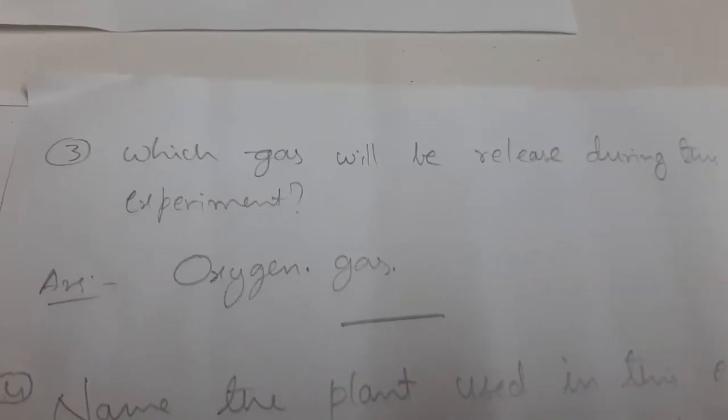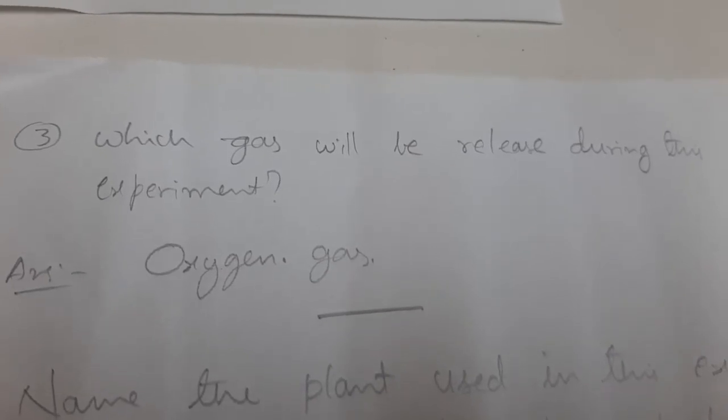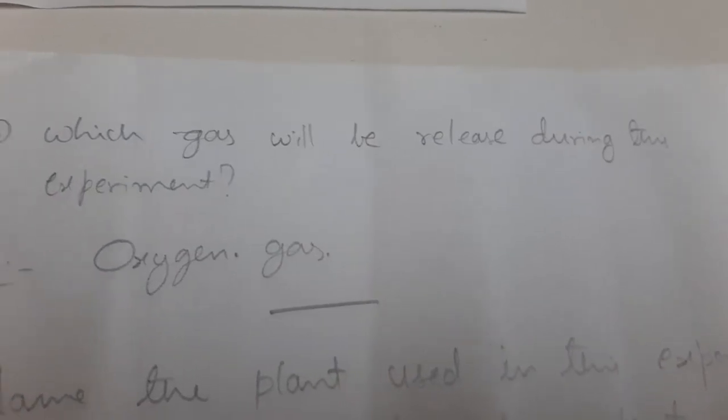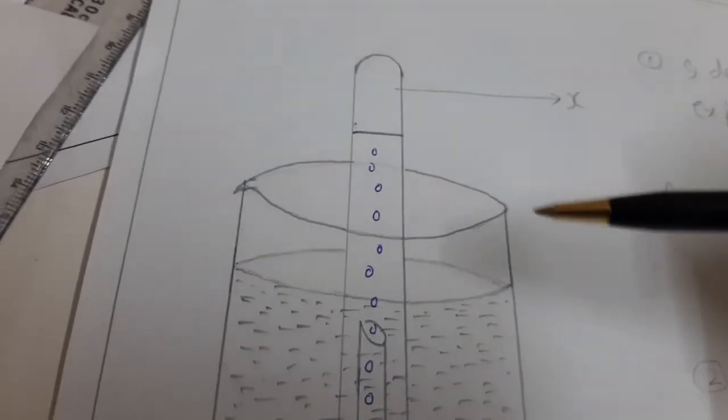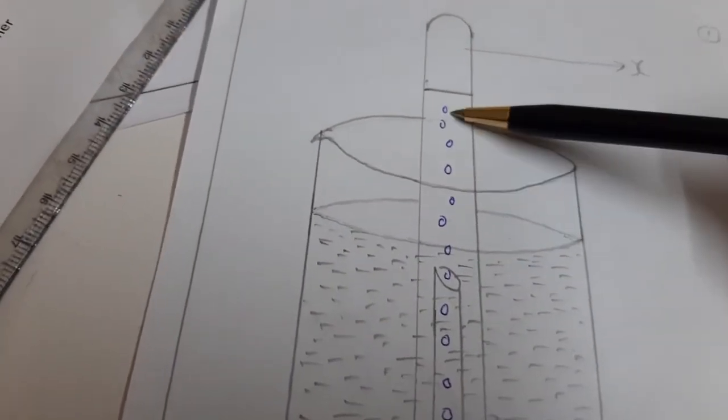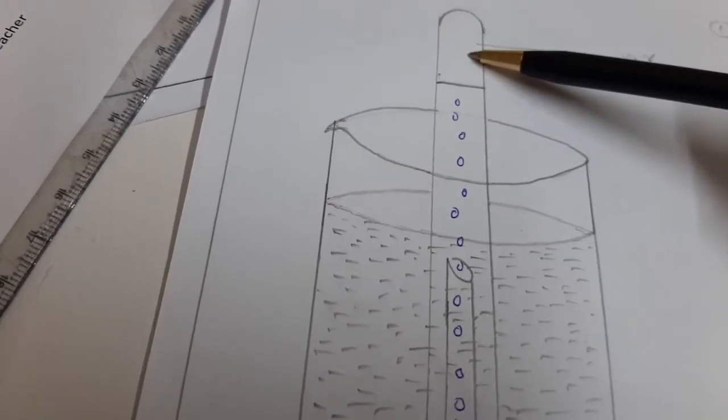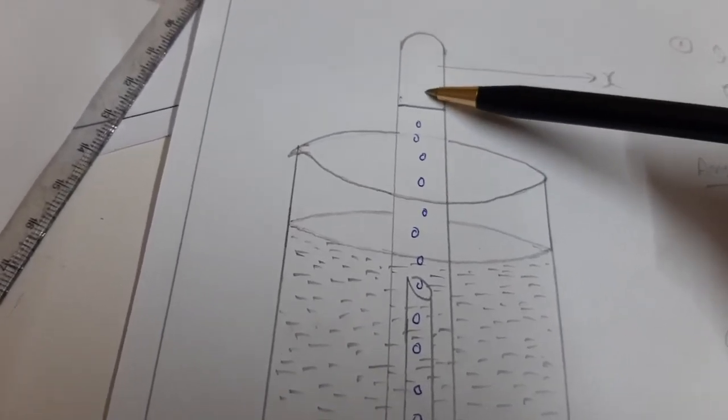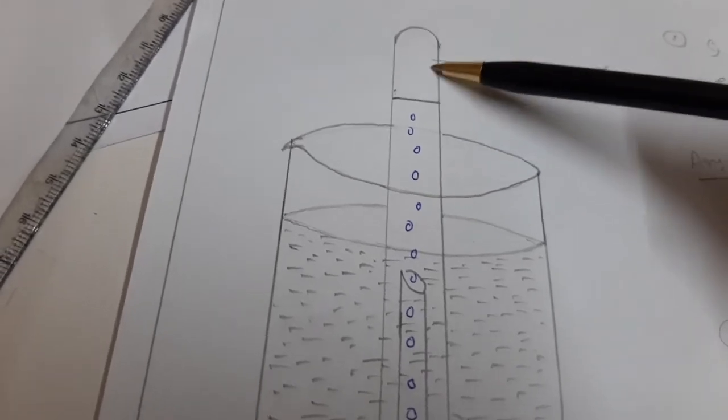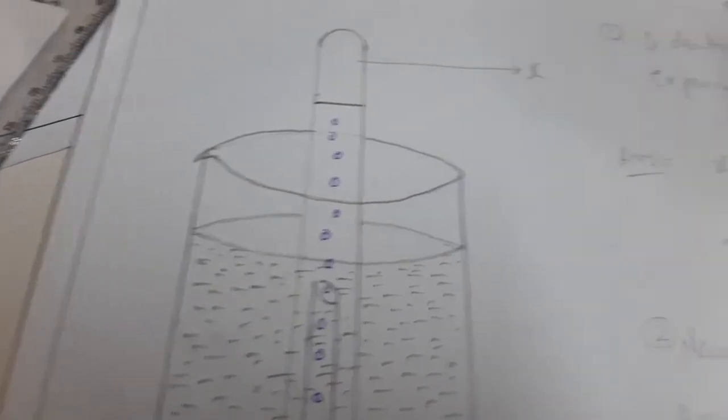Students, come to the next question. Third question: which gas will be released during the experiment? Students, observe this. Here some bubbles are coming and here some gas is there. What is the gas? It is oxygen gas. Answer: oxygen gas.